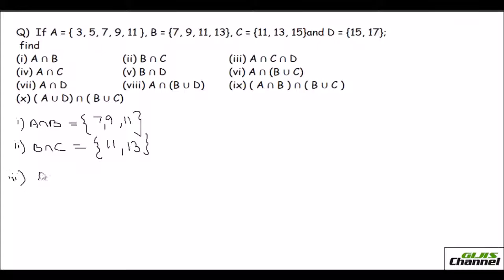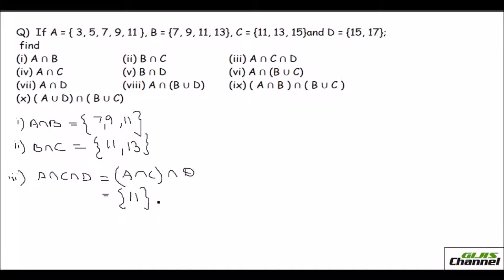The third problem is A intersection C intersection D. Let us do A intersection C first — that gives {11}. Then intersection D: there is nothing common between {11} and D which has 15 and 17. So that is an empty set.